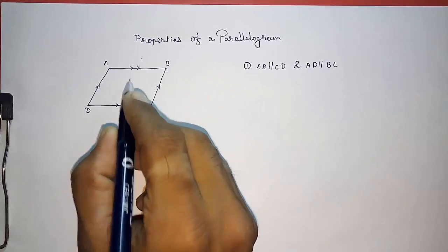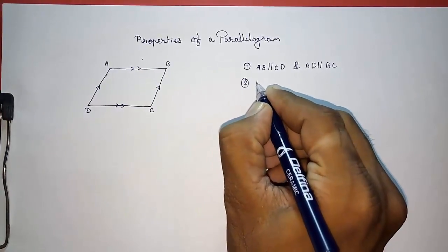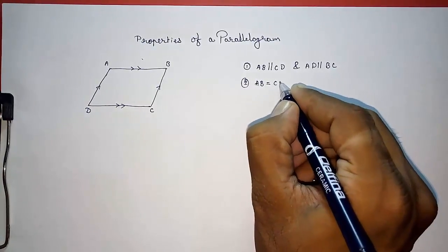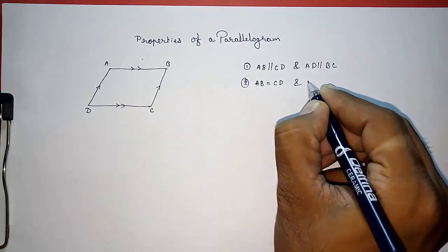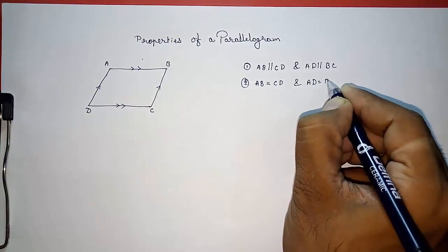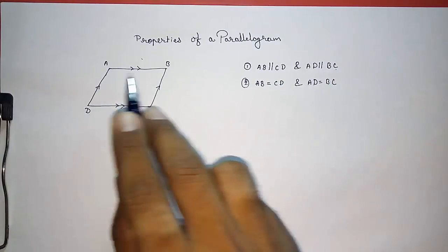Also, we can say the opposite sides are equal. This means AB is equal to CD and AD is equal to BC. So opposite sides are parallel - both pairs of opposite sides parallel - and both pairs of opposite sides are equal.